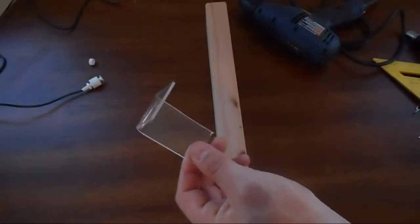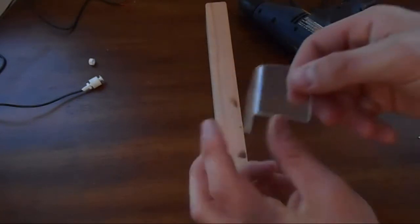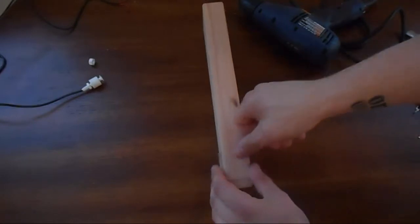Our acrylic is bent, ready to go. All we need to do now is drill the holes for the float switch and the suction cups. So our first one is going to be in the bottom here for the float switch. So let's go ahead and do that.